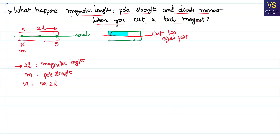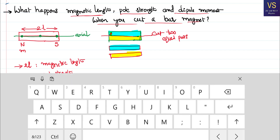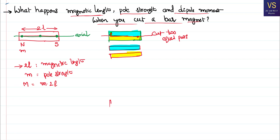One part is the upper piece and the other is the lower piece. If you observe the length of each piece, from one end to the other it is still 2L. Even when you cut the magnet along the axial line, the magnetic length 2L remains the same for each piece.